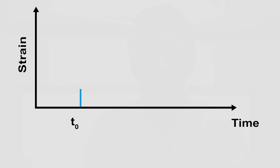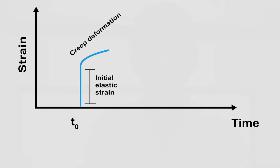When a load is placed on a concrete structure it will immediately show an elastic deformation. When this load is sustained over time the deformation will grow. This is what we call creep. This will happen quickly at first and then gradually it will be slowing down.